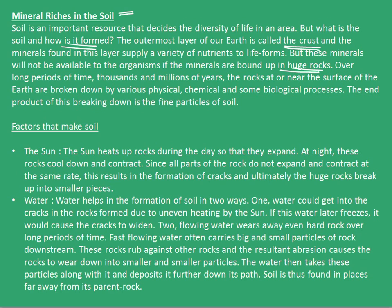Over long periods of time — thousands and millions of years — the rocks at or near the surface of the earth are broken down by various physical, chemical, and biological processes. The end product of this breaking down is fine particles which are called soil. Now let's see some factors that make soil.